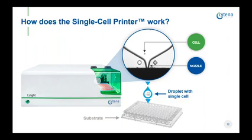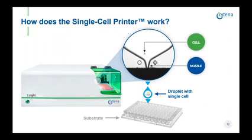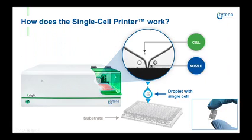Only those droplets that contain a cell with the right properties are deposited onto the target substrate. Empty droplets or droplets containing multiple cells are removed with a vacuum suction positioned below the dispenser. This allows us to rapidly dispense droplets with single cells into well plates, as I will show in a short video now. There is also an image of a disposable dispensing cartridge here.